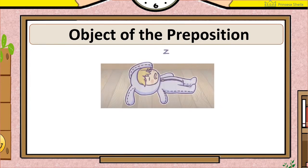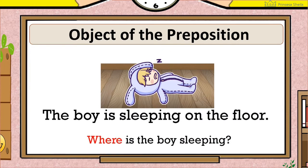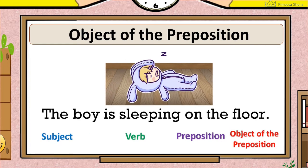Another example. The boy is sleeping on the floor. Where is the boy sleeping? On the floor. Notice that the floor comes next to the preposition on. So floor is the object of the preposition.